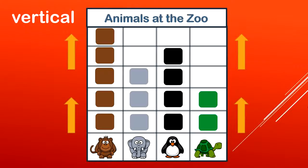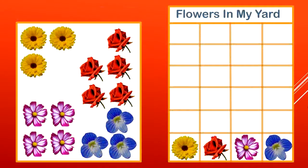Let's work on creating a bar graph going vertical from bottom to top. Here's a picture showing how many flowers are in my yard. How many yellow flowers, red flowers, purple flowers, and blue flowers? Let's look at the picture to fill in our vertical bar graph.